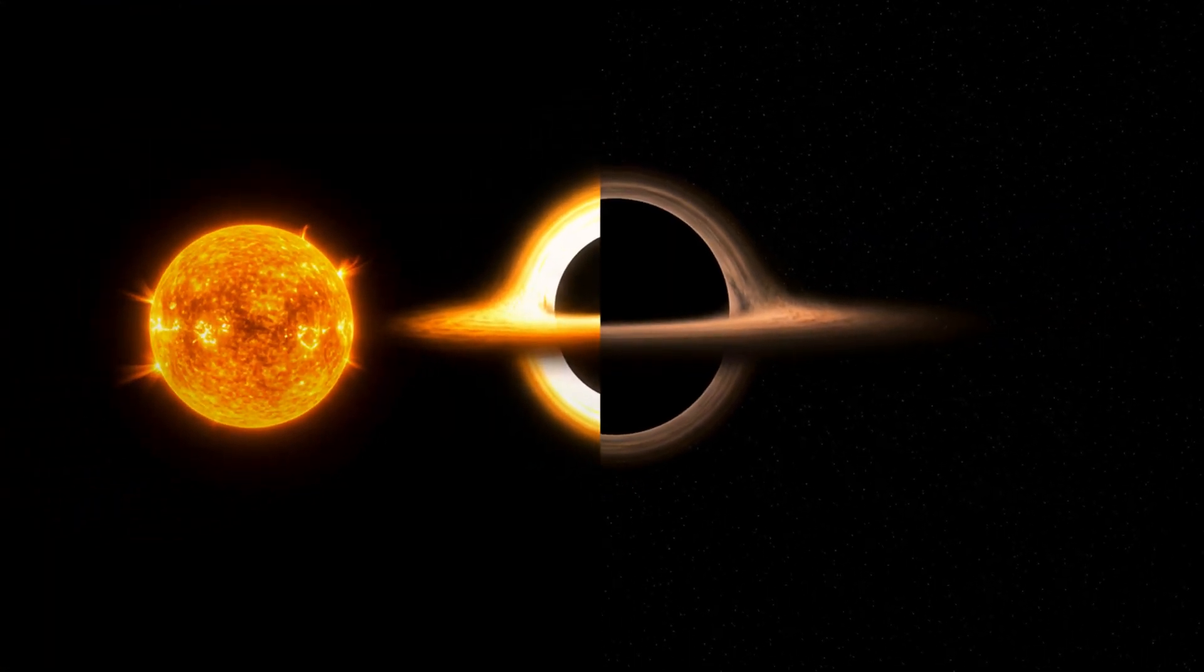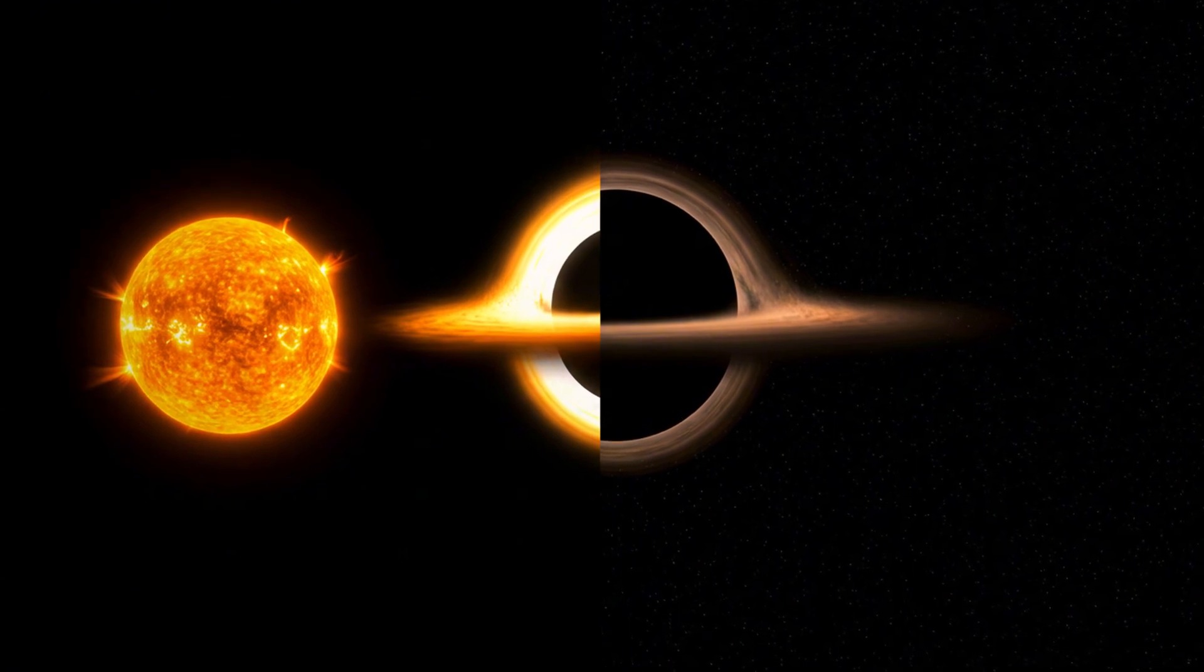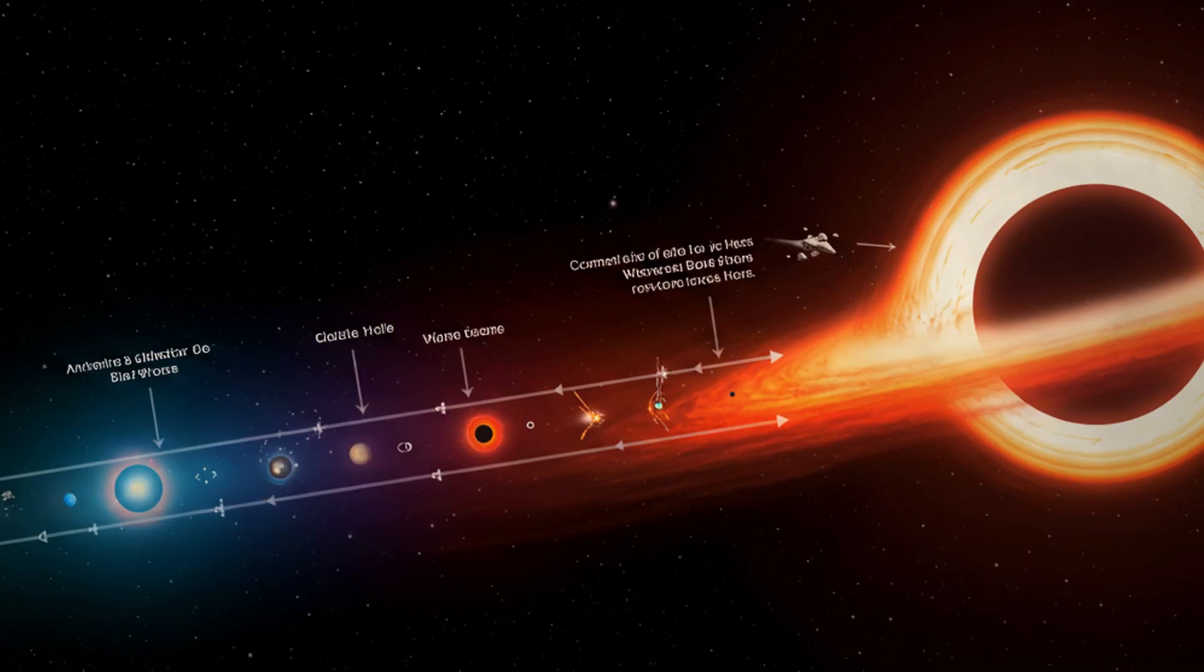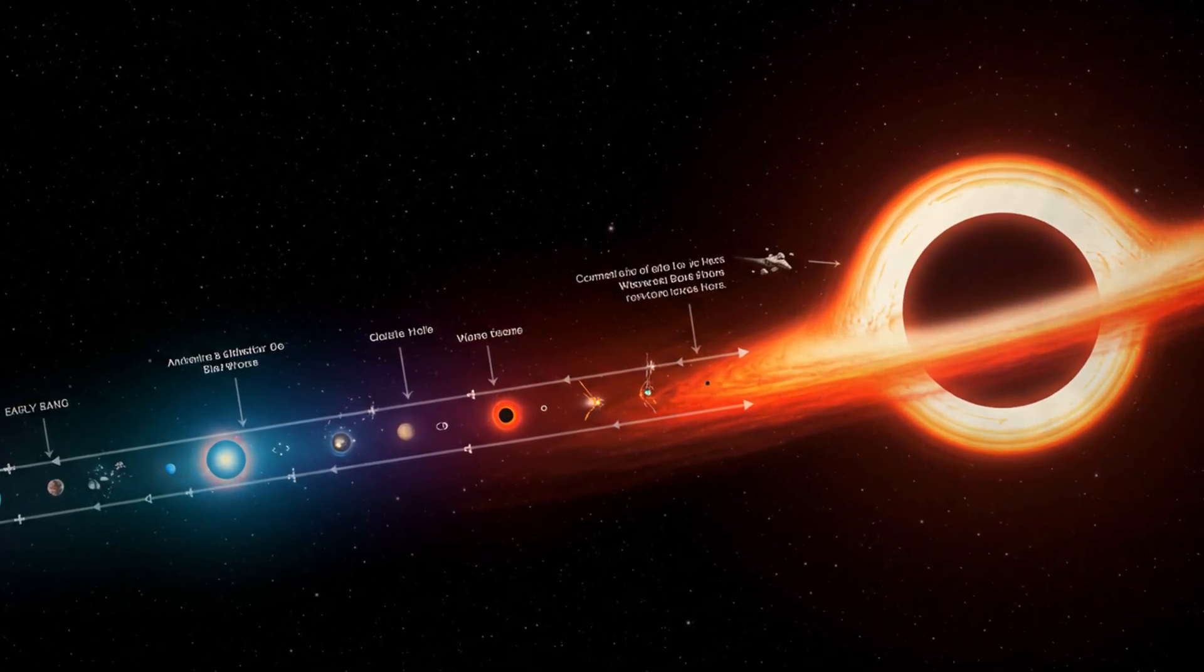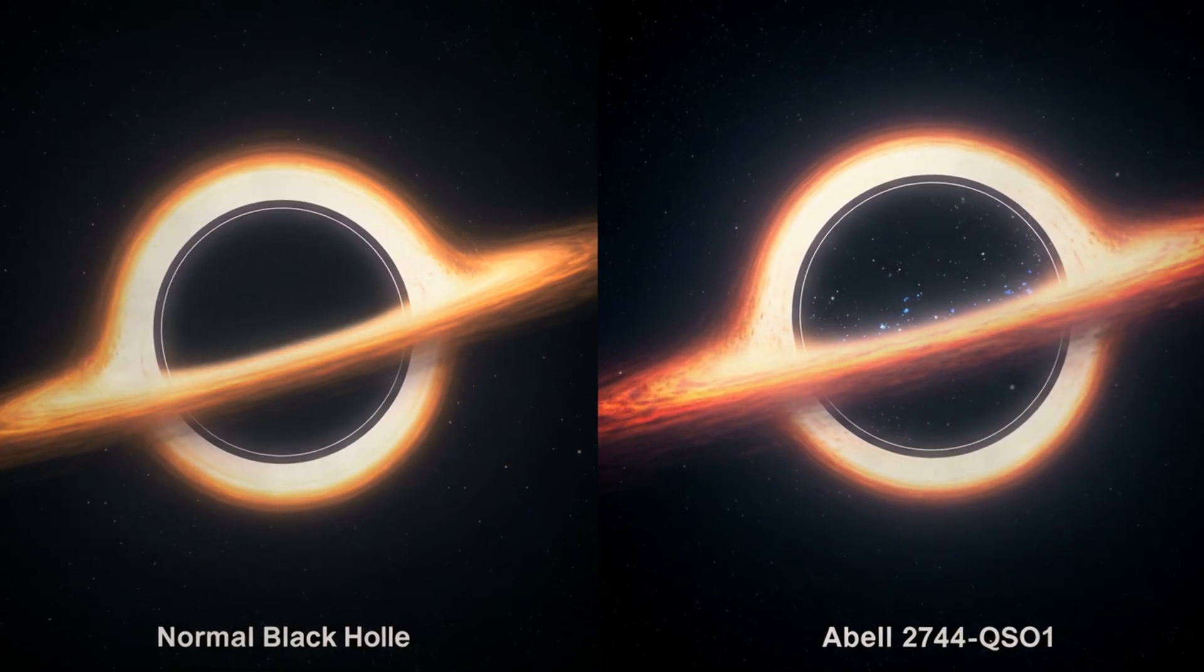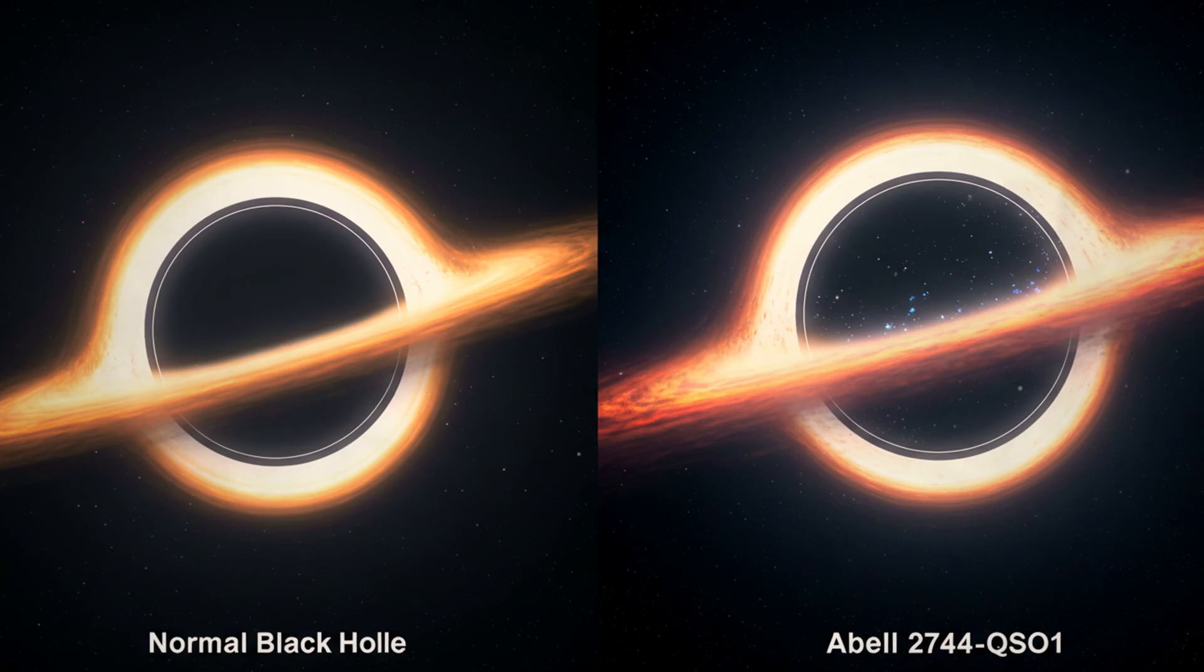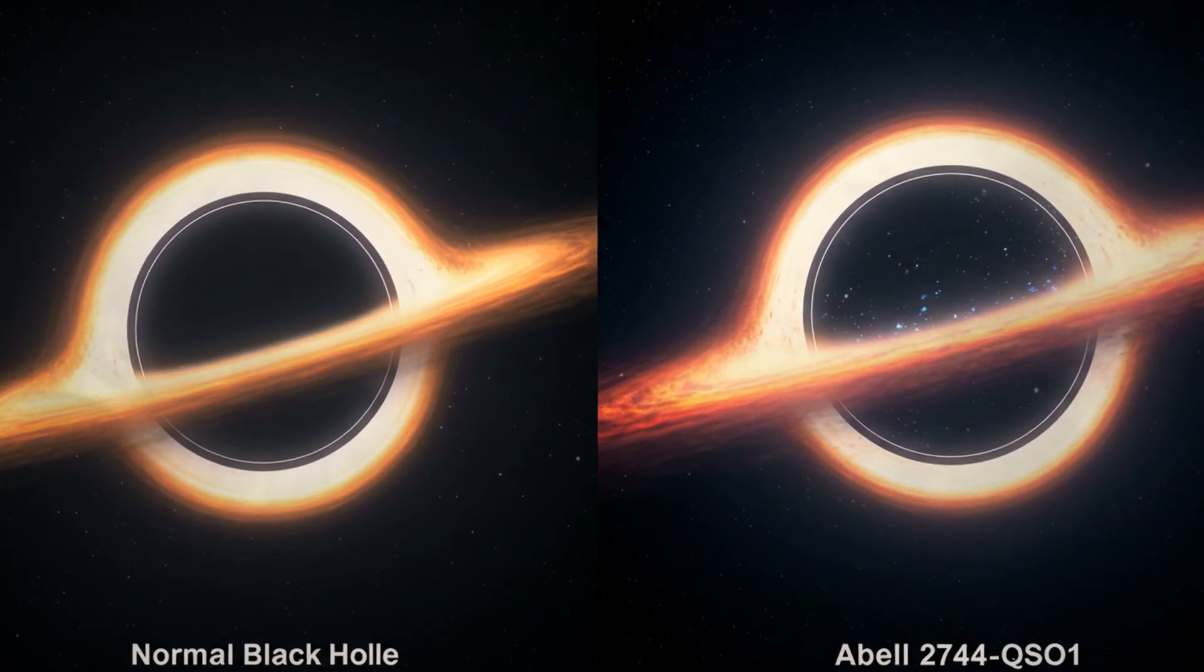That might not sound shocking, until you realize this black hole is already millions of times the mass of our Sun. According to standard theories, there shouldn't have been enough time for such a giant to grow. Normally, black holes start small, then slowly feed on stars and gas over billions of years. Yet here was a monster, fully grown, at the dawn of the universe.